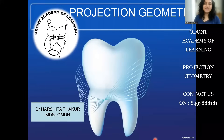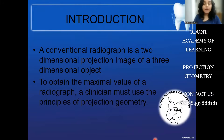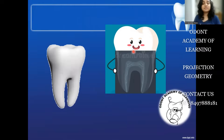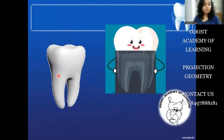Hello everybody, this is Dr. Harshita Dhakur, faculty at Odont Academy of Learning, and today I'll be talking about principles of projection geometry. We need to know about these principles because our tooth is a 3D object, and whenever there's a disease associated with the tooth or its surrounding structure, we capture it in x-ray films, which is a 2D object. To obtain maximal information from this 3D structure onto a 2D object, we need to follow certain principles.